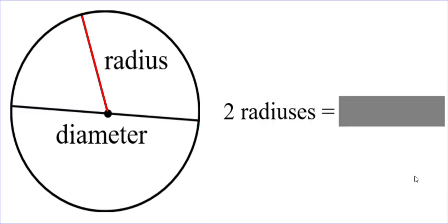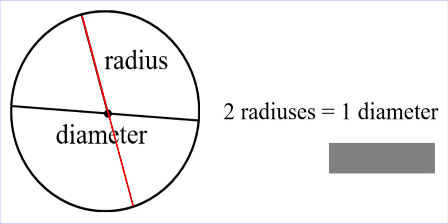Now, here are some things you need to know. Two radiuses, what would they be equal to? Let's take a look at this. If I take a radius and another radius, put them together, notice it goes the whole way across. Two radiuses are the same as one diameter.